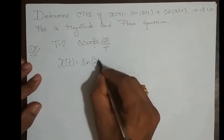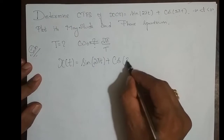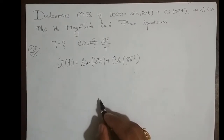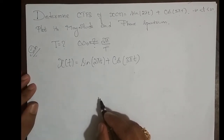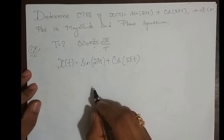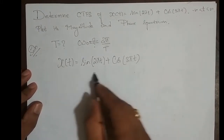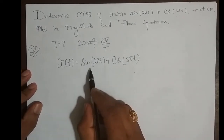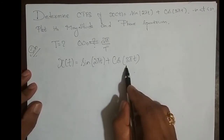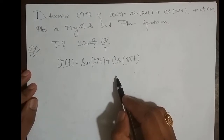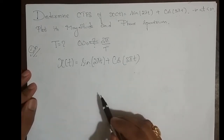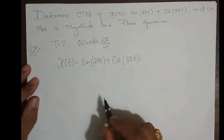x(t) = sin(2πt) + cos(3πt). When we have the addition of more than one signal, we need to check periodicity. If the ratio of individual periods T1 and T2 is rational, then the combined signal is periodic. In this case, both signals are clearly periodic and the ratio is rational.